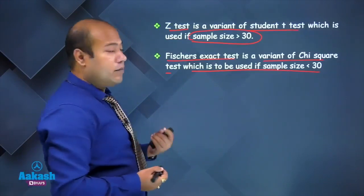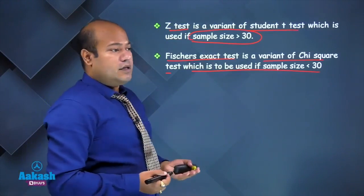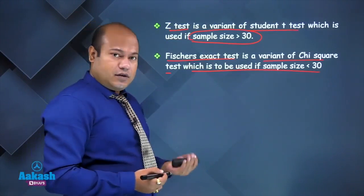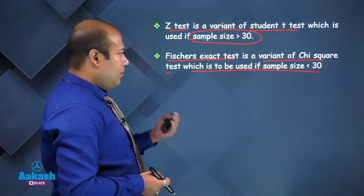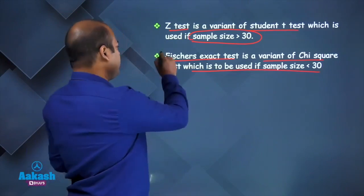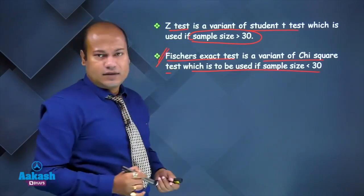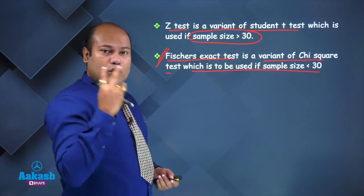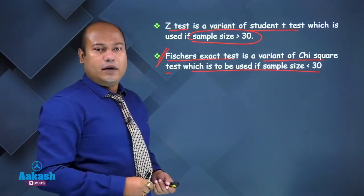Remember: if it's a non-parametric test comparing in terms of percentage, fraction, or proportion, and the sample size is less than 30, then you go for Fisher's exact test — provided there are two groups and no intervention is being done.